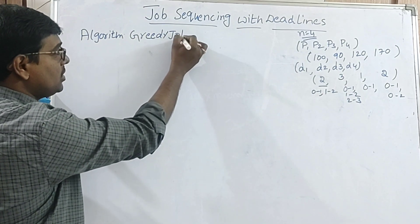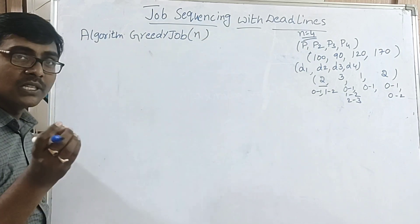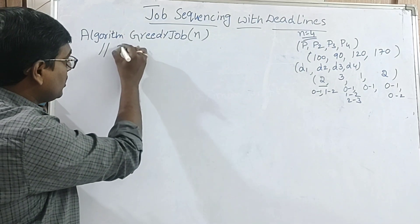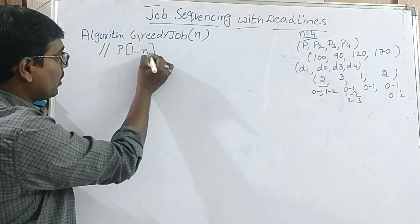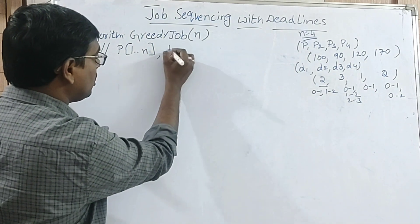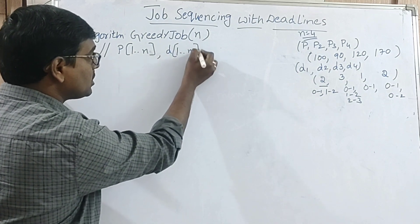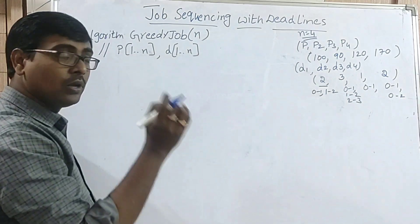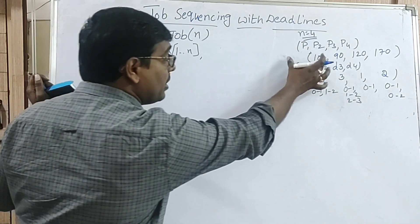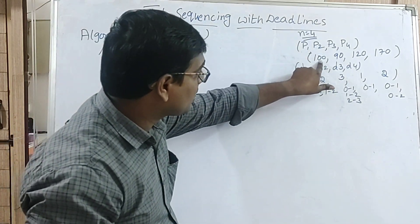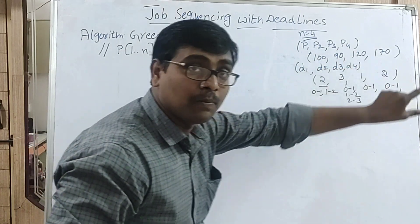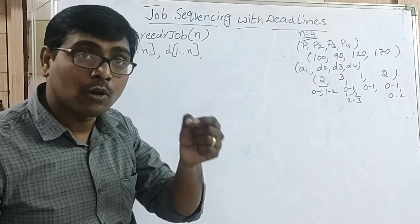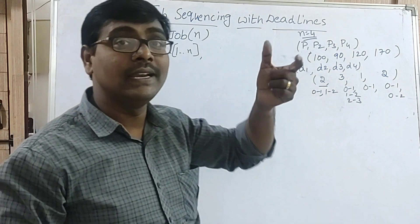Assume my algorithm name is Greedy-Job of n, where n specifies the number of jobs. Each job consists of a profit — P1 to n specifies the profits of n jobs, and D1 to n specifies the deadlines of n jobs. In the greedy approach, whenever a question is given, do not consider jobs in their original order.